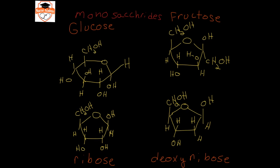One thing to make sure we understand when looking at these structures: every place that is a joint between two lines and doesn't have a letter, those are all carbon atoms. When we start getting to larger molecules, all of these joints are understood to be carbon atoms.